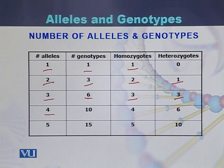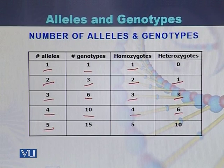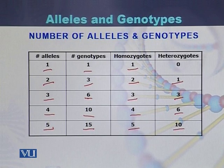If a gene contains four different alleles, the number of genotypes will be ten: four will be homozygous and six will be heterozygous. If a gene contains five different alleles, there will be a total of 15 different genotypes: five will be homozygous and ten will be heterozygous.